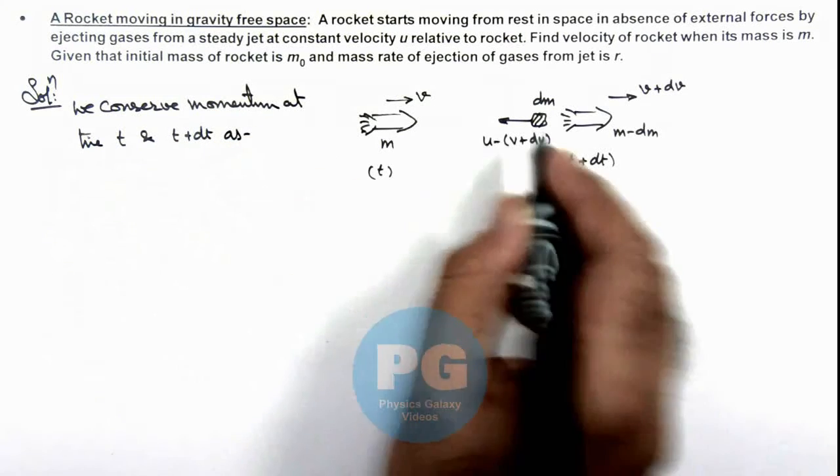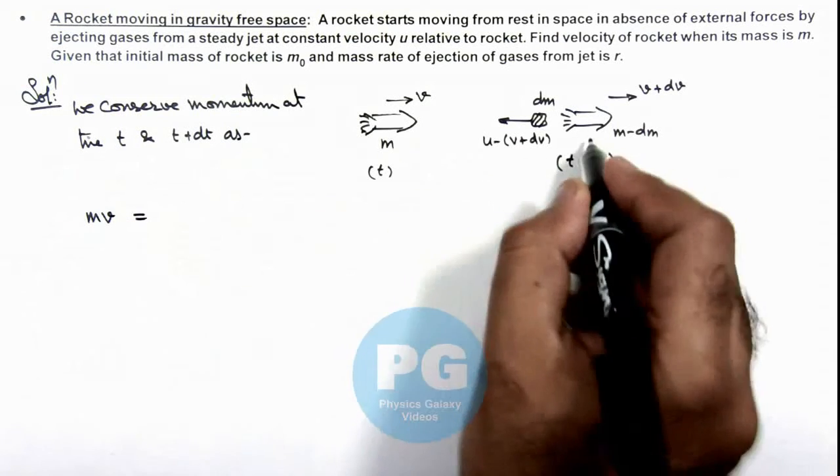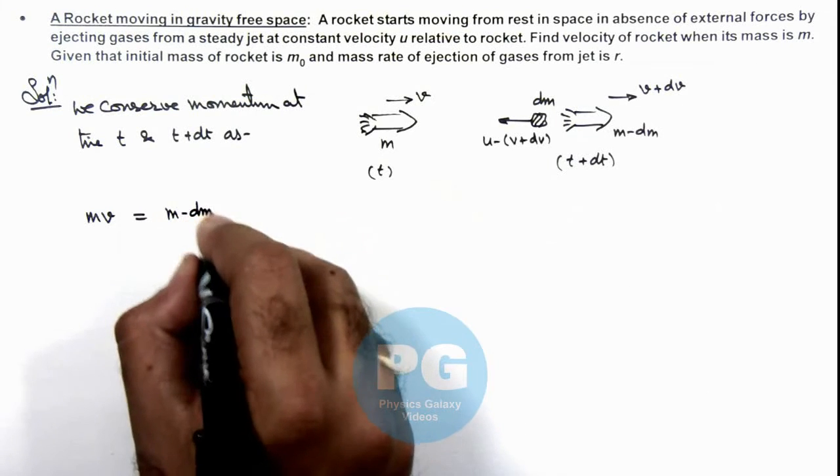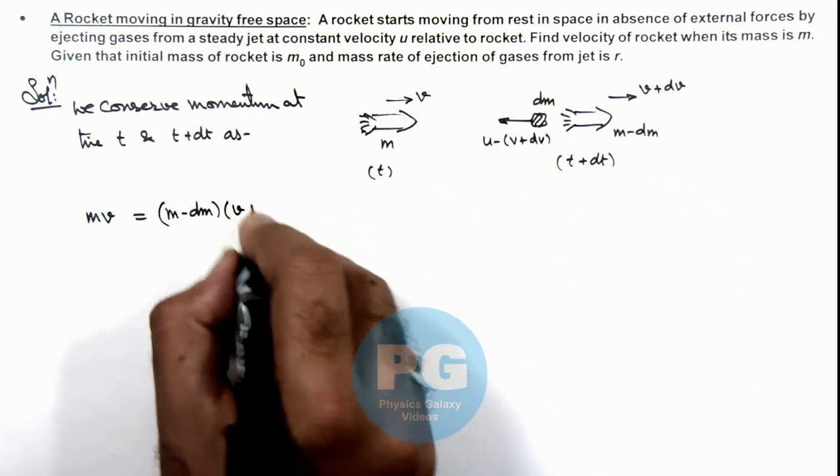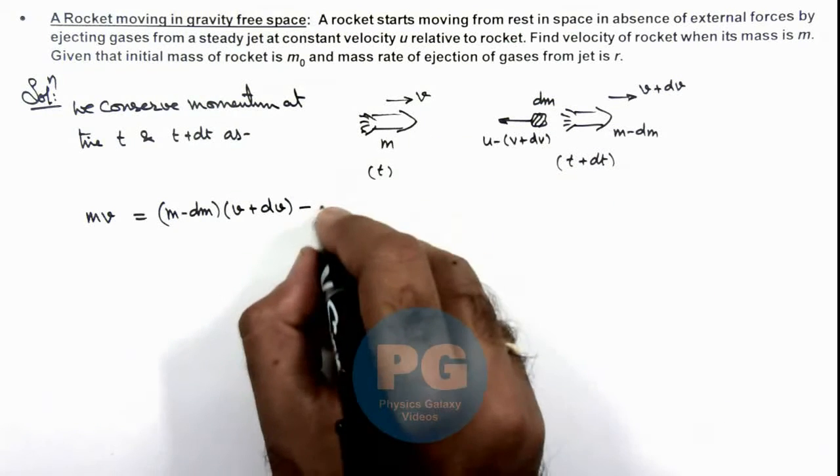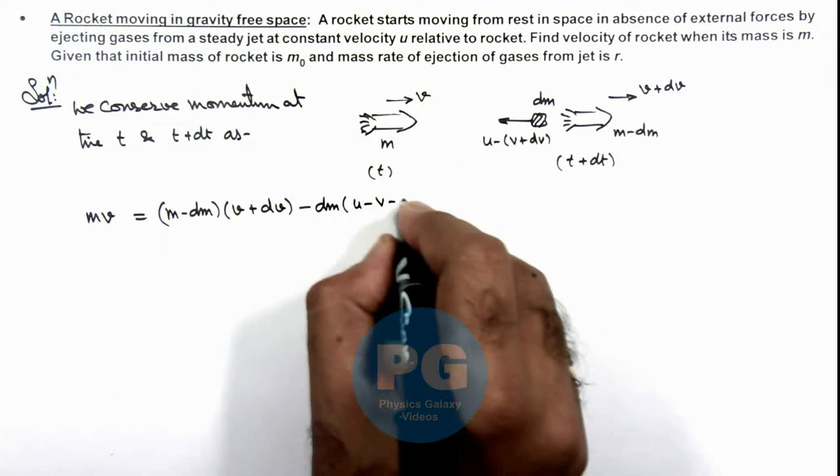Here you can see initial momentum of rocket was mv at time t, and at time t plus dt the momentum of rocket is (m minus dm) multiplied by (v plus dv) minus the momentum of ejected gases that is dm multiplied by u minus v minus dv.